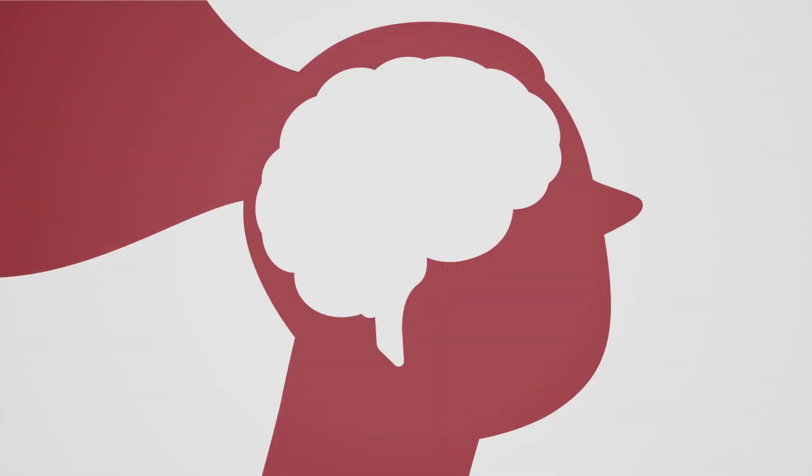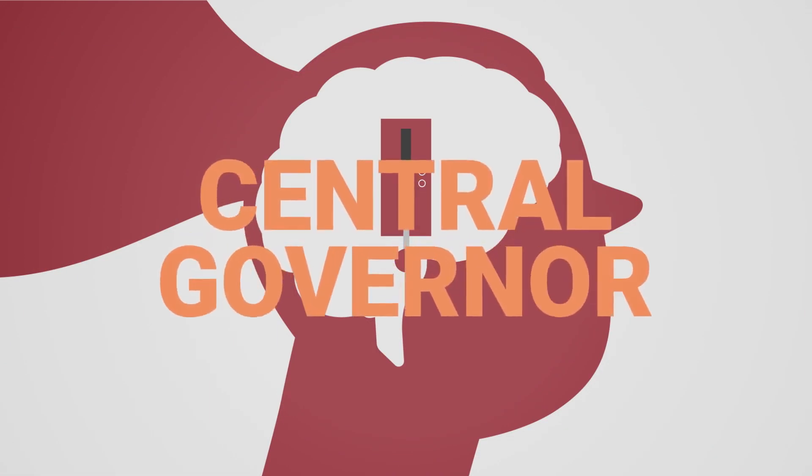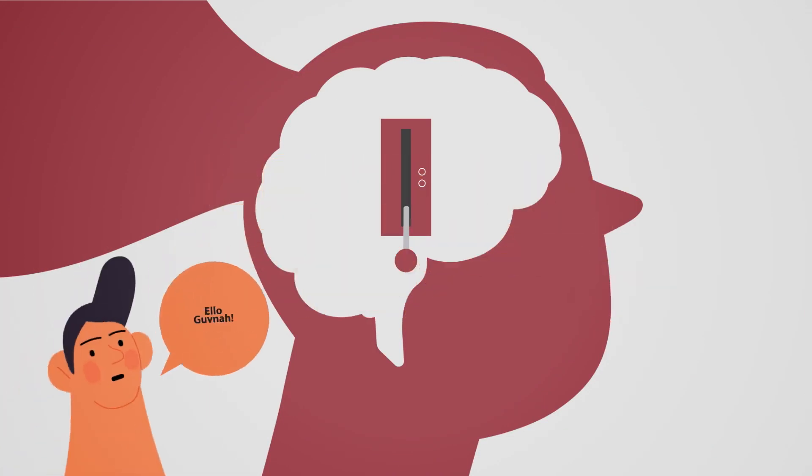Scientists believe there's a switch in the human brain that limits us physically. It's been called the central governor. But does that switch limit us in other ways? And can we flip it?